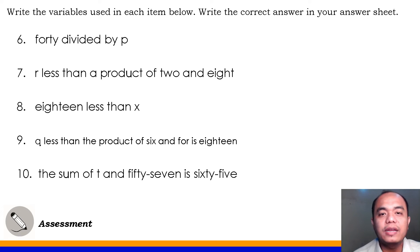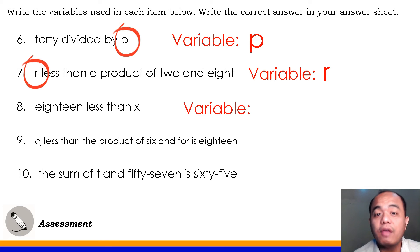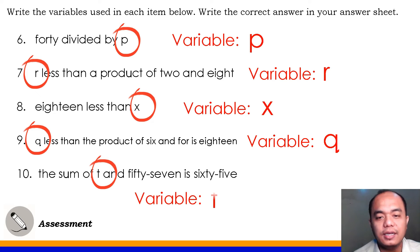Next, number 6, what variable was used here? Very good, it's letter P. Number 7, what variable was used? Number 7 is R. Number 8, what variable was used? Very good, it's letter X. Number 9, what variable was used in number 9? It's Q. Very good. And the last number is letter T. Very good. I'm sure you've got a very good score in your assessment for your lesson 2, and this is about identifying the variable in the given expression and equation. Good job!